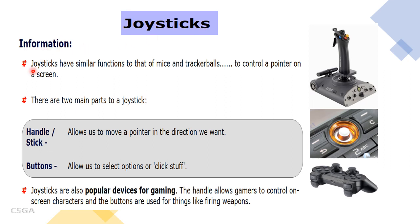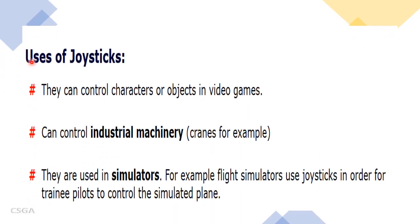Joysticks have similar functions to mice and trackballs to control the pointer on a screen. There are two main parts of a joystick: a handle or stick, and buttons. Joysticks are popular devices for gaming — the handle allows gamers to control characters on the screen, and the buttons are used for things like firing weapons. Uses of joysticks include controlling characters in video games, industrial machinery, and simulators.